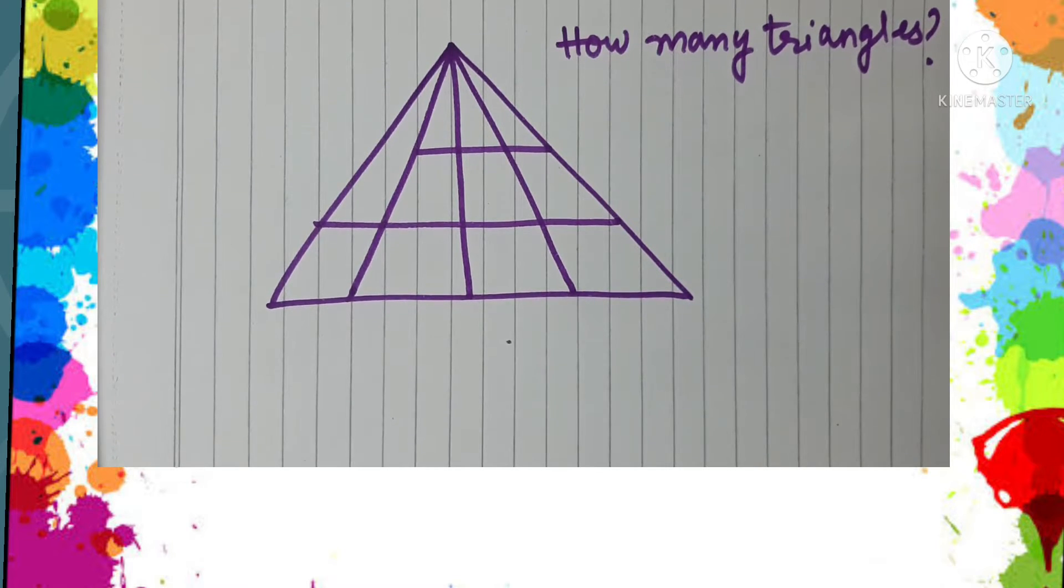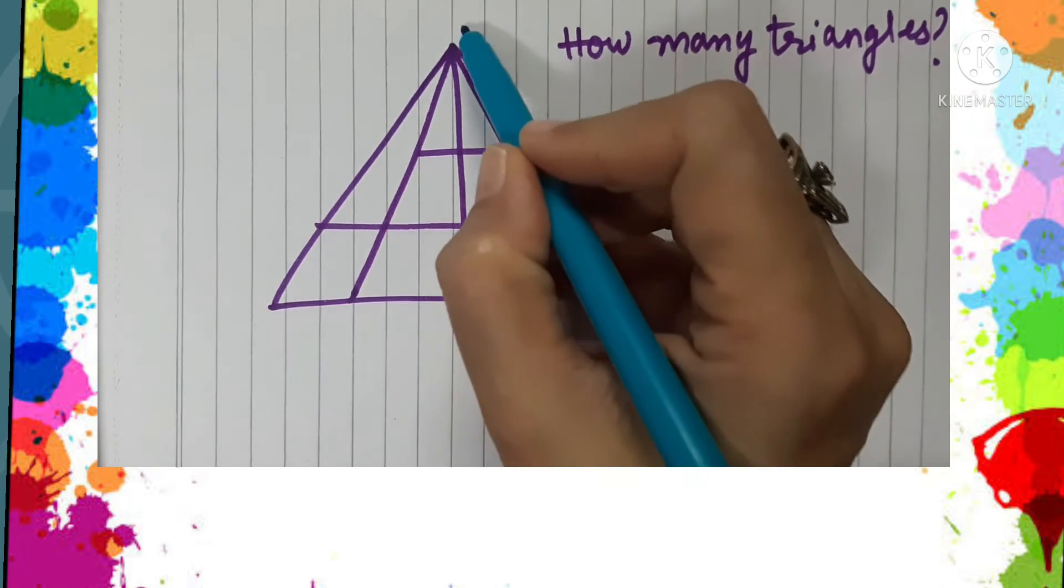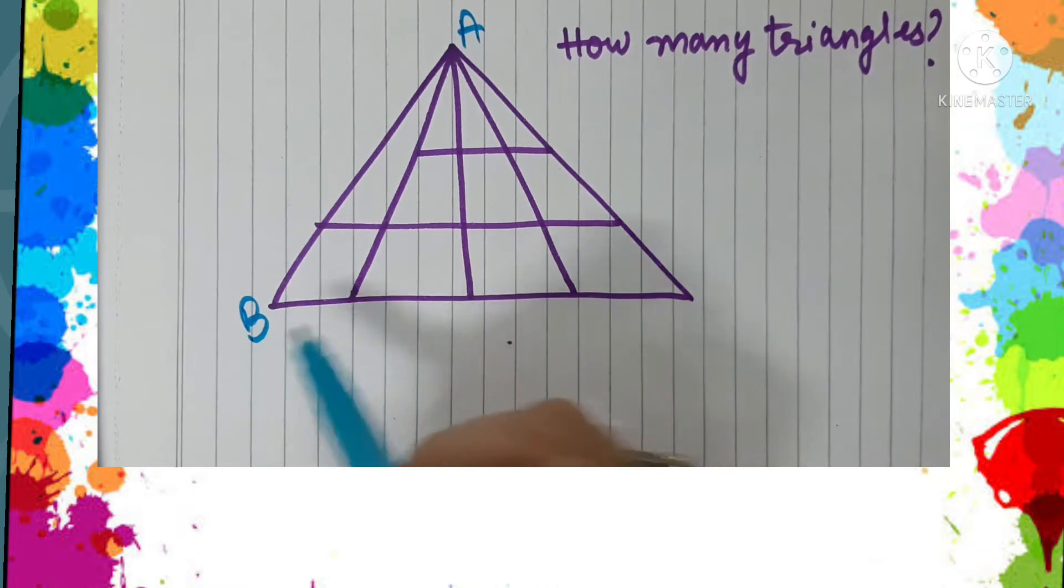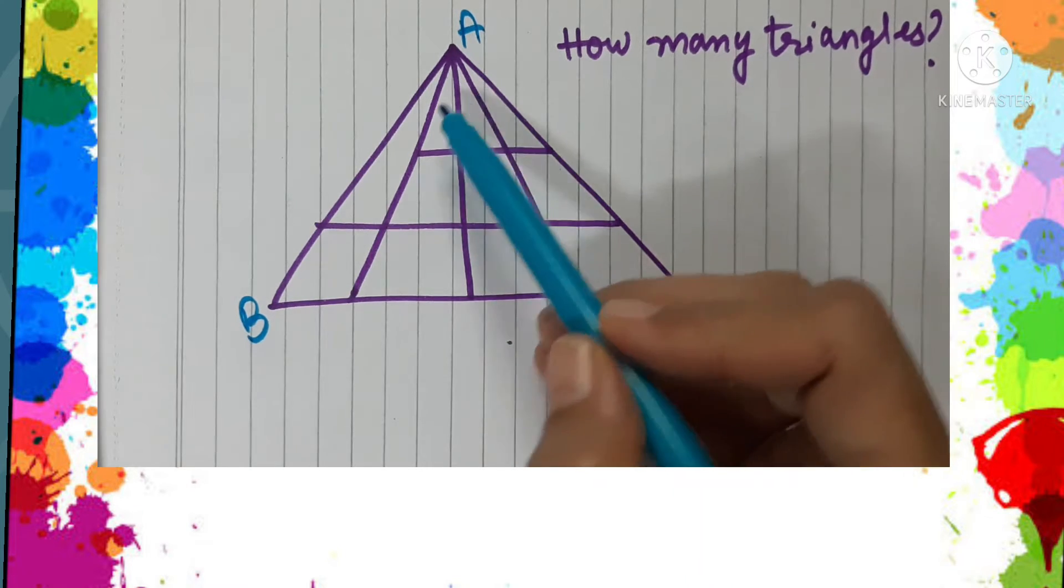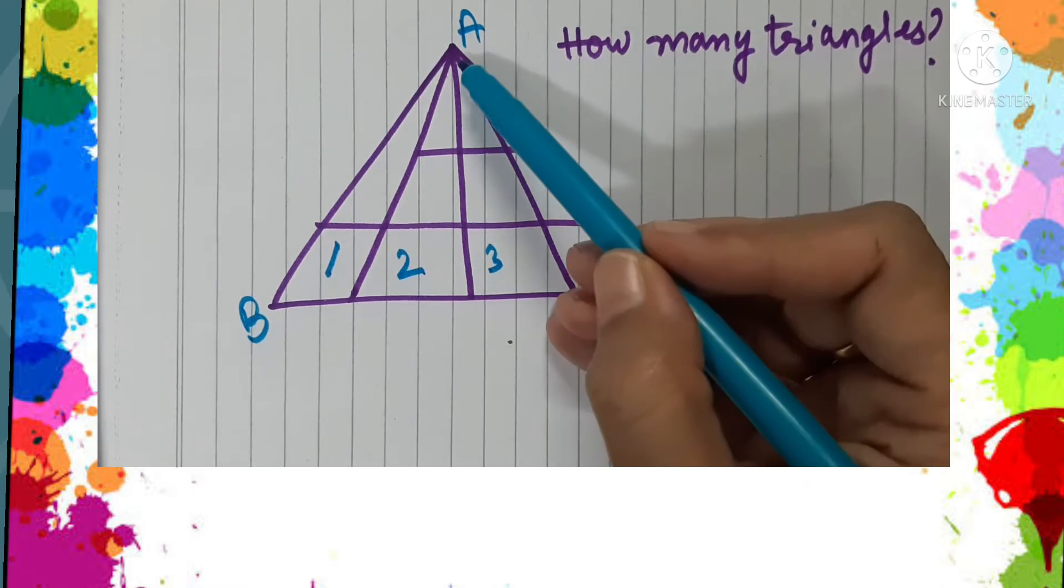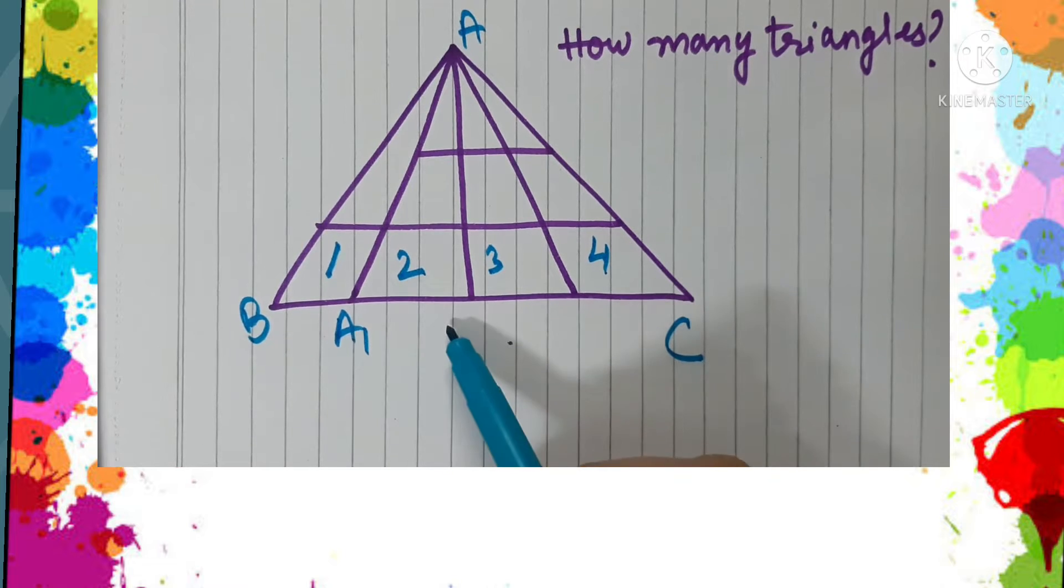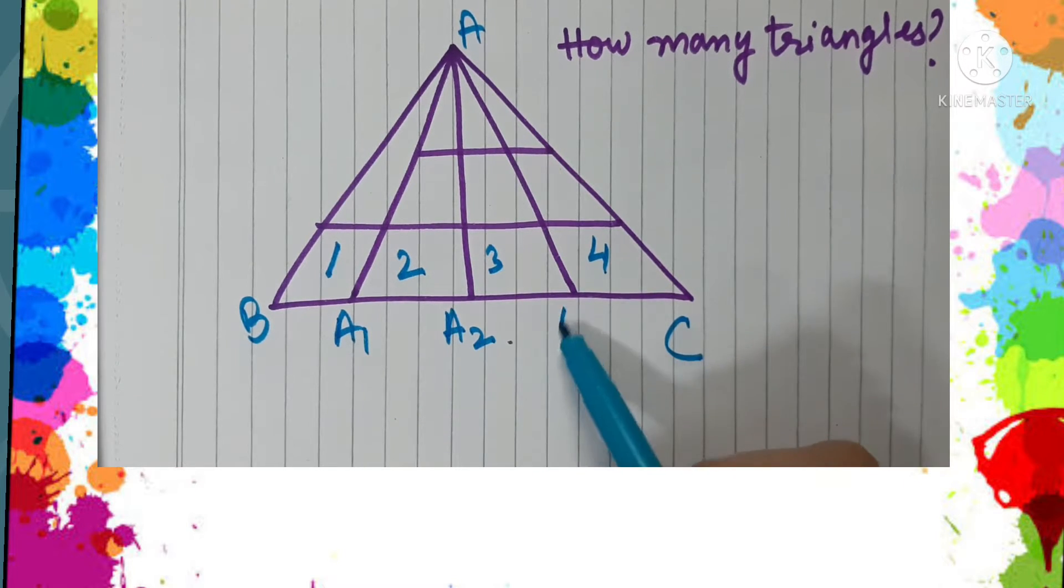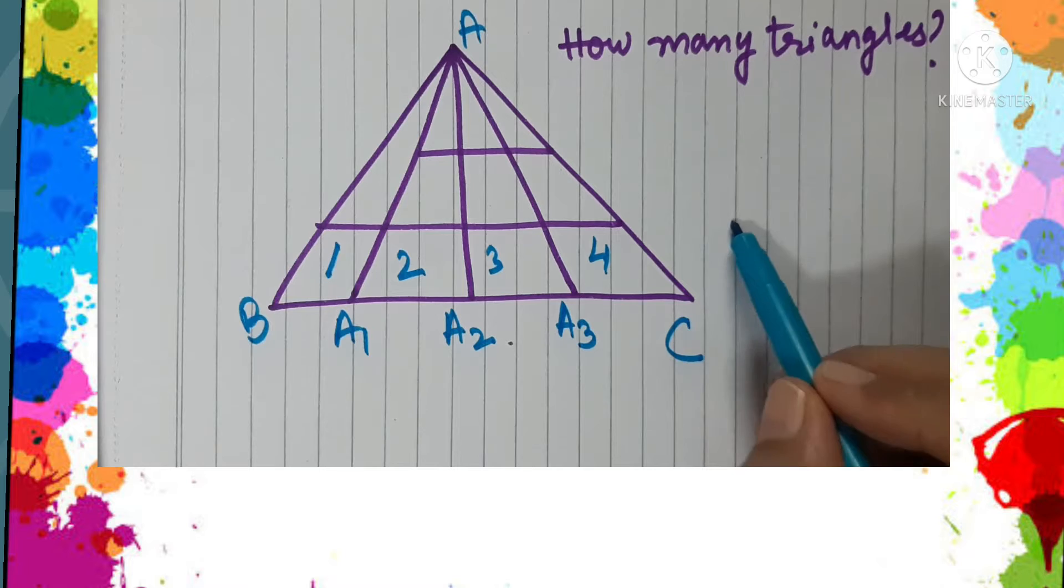Okay, let us see how we count. Here you can see that ABC is a triangle which is divided into four parts—one, two, three, four—by the line segments. You can label it as a, a1, a2, and a3. So the number of triangles at this level will be 1 plus 2 plus 3 plus 4, that is equal to 10.